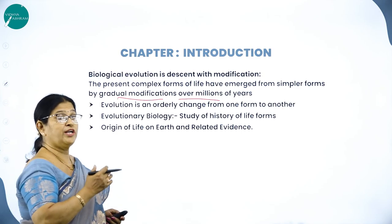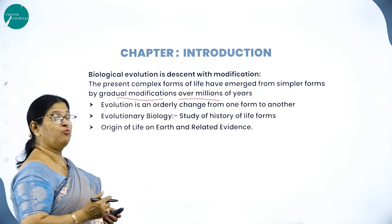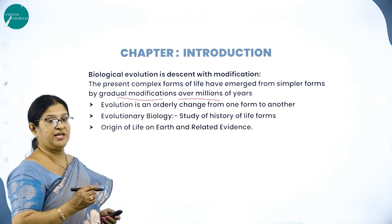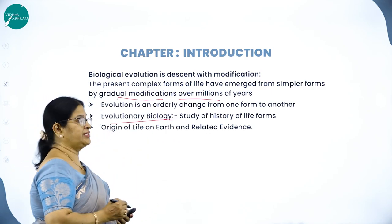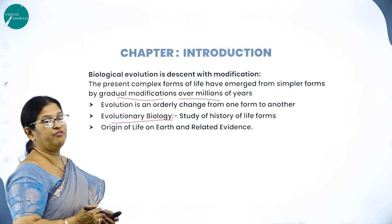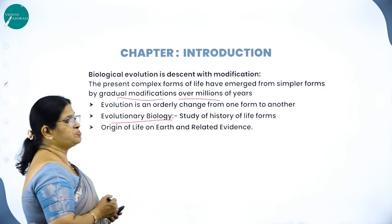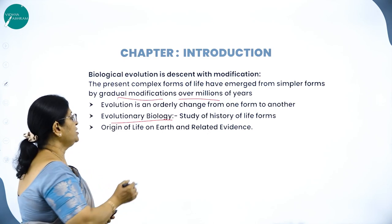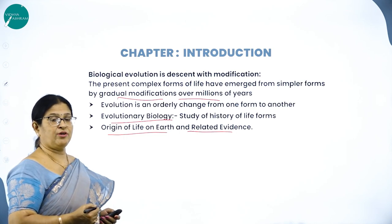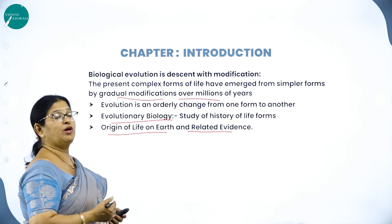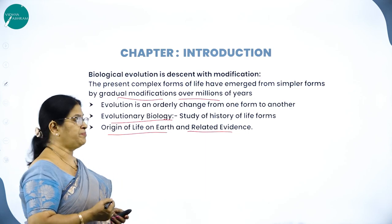Evolution is called an orderly change from one form to another. The branch of science which deals with the study of evolution is called evolutionary biology — that is, the study of the history of life forms. In this chapter you will be studying about the origin of life on earth and related evidence.